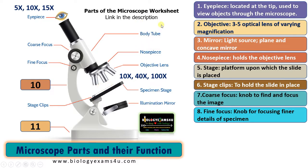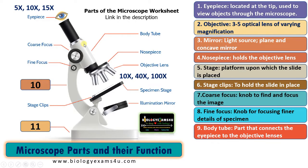The next part is the body tube. The body tube is the part that connects the eyepiece to the objective — it has the eyepiece on the top and the nosepiece with objective lens on the bottom. It is actually a hollow tube. The light that reflects from the mirror reaches the specimen, passes through the specimen, passes through the objective lens, passes through this hollow body tube, and finally reaches the eyepiece.